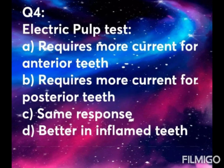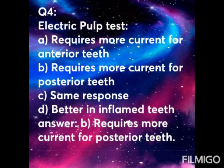Question 4: Electric pulp test — Option A: requires more current for anterior teeth. Option B: requires more current for posterior teeth. Option C: same response. Option D: better in inflamed teeth. The answer is Option B — the electric pulp test requires more current for posterior teeth.